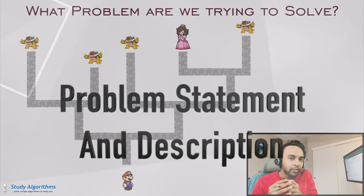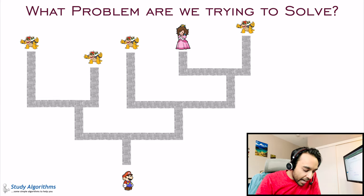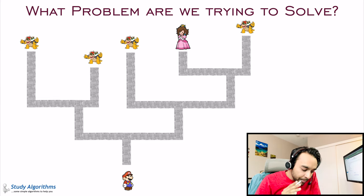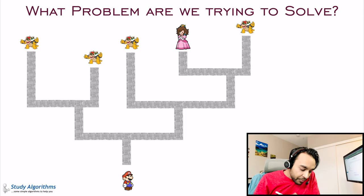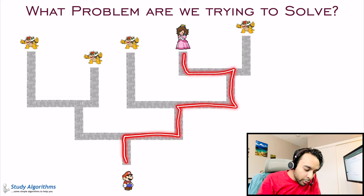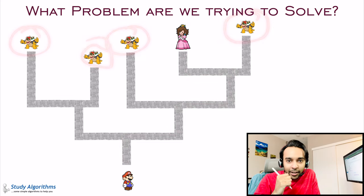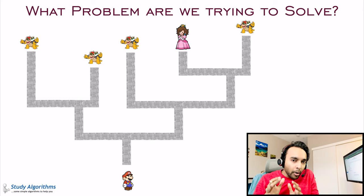I always believe that when you are trying to learn a new concept, it becomes very easy if you can relate it to some real-life example. So going back to our example of a video game, I have this kind of scenario in front of me, and I am playing with my character Mario. While you are playing the game, you have Mario and so many paths in front of you. Only one of the paths will lead you to Princess Peach, where you want to go. All the other paths will lead you to King Koopa, who is destined to kill you. So what do you do? How do you find this path?